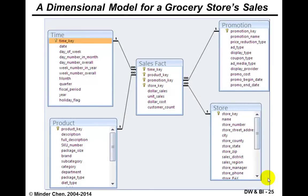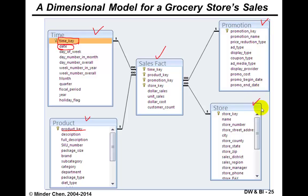Let's look at an example of a grocery store's data warehouse star schema design. At the center of the star schema is the sales fact table. We have four dimensions: the time dimension based on date with a time key as the primary key, a product dimension using a product key, a promotion dimension, and a store dimension. The store dimension has many attributes related to the store, some of which are potentially performance drivers. All dimension tables have a one-to-many relationship linking to the sales fact table.